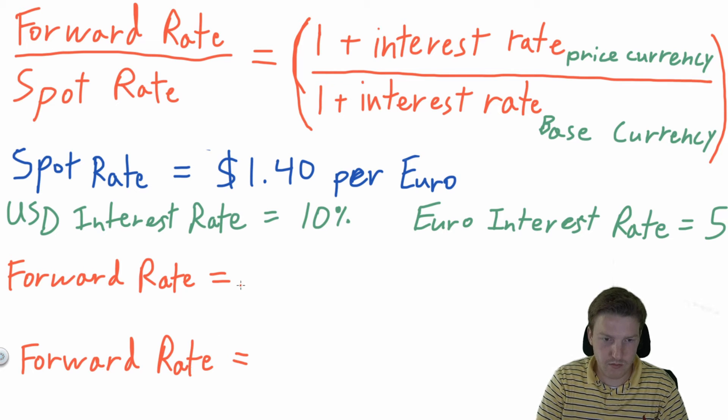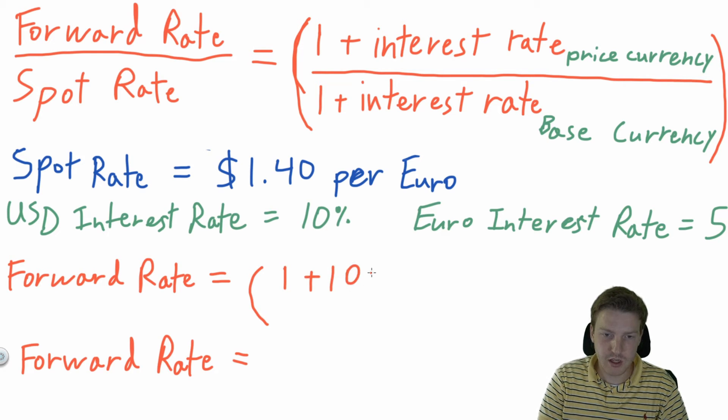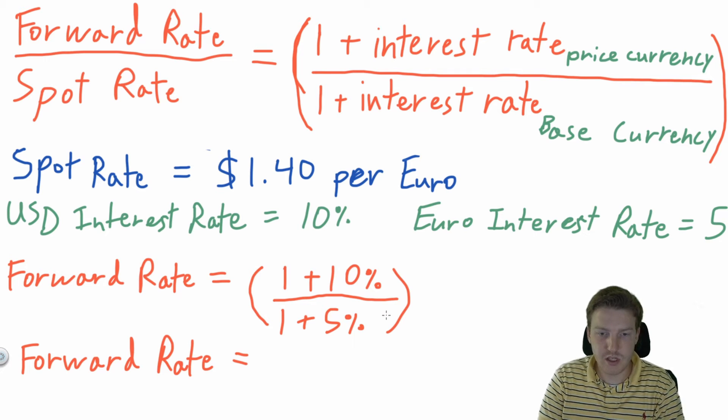So we're going to start off with our one plus our price currency's interest rate, which is our US dollar. So that's one plus 10%, which is just 1.1 divided by one plus our base currency's interest rate, which is the euro interest rate of 5%. And then you can see how in this formula we have the spot rate or the forward rate divided by the spot rate. So we're going to have to multiply both sides by the spot rate.